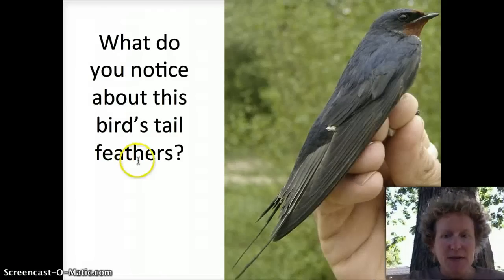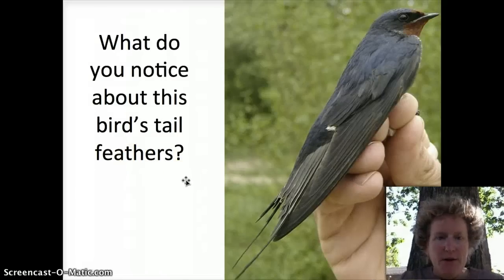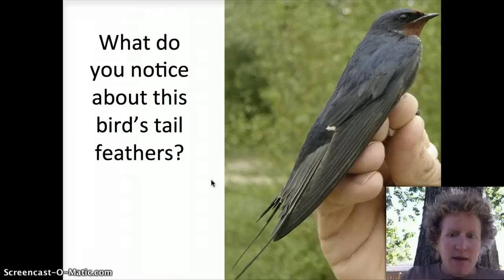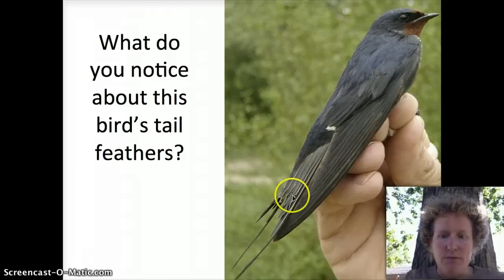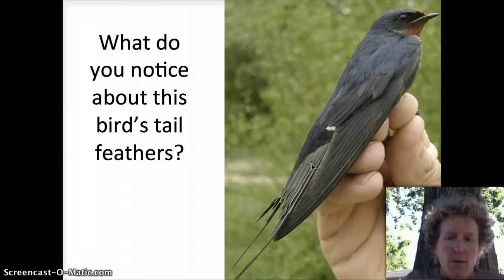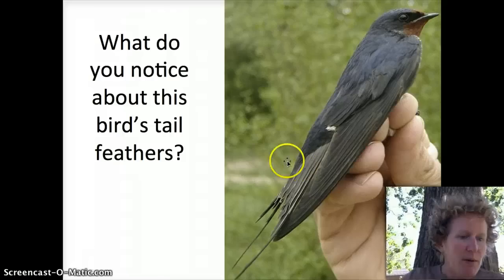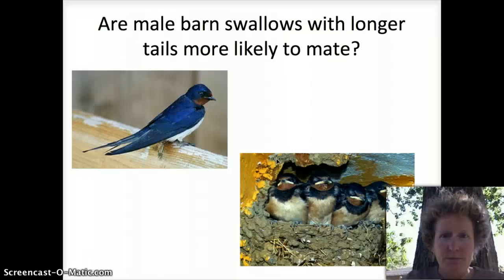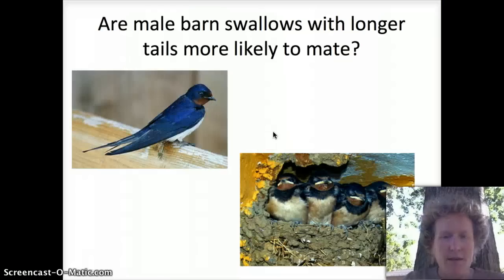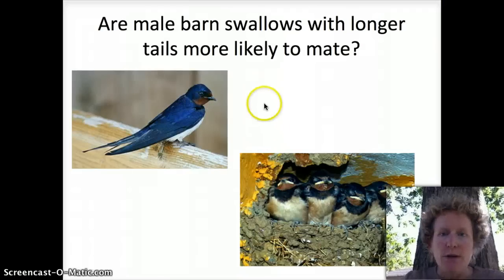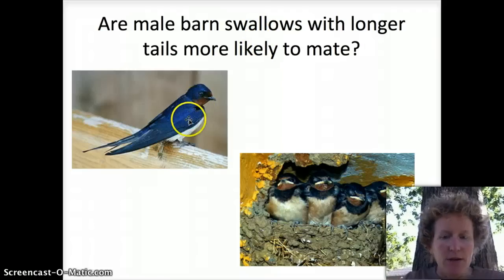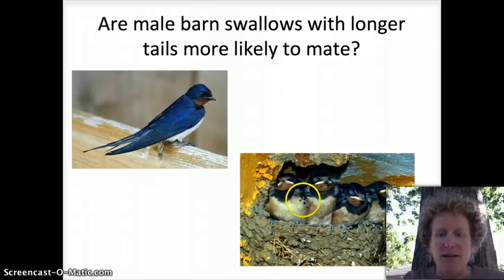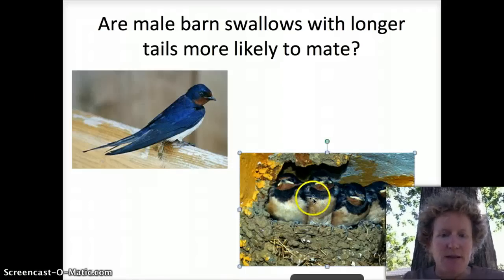One experiment discussed in the book was about barn swallows and making their tails a different length. Scientists noticed that barn swallows have really long tails and wanted to know whether this had to do with flying, mating, or both. Their question was really about mating: are male barn swallows with longer tails more likely to mate? You can measure this by looking at genetic evidence for whether their genes get passed on to their babies.